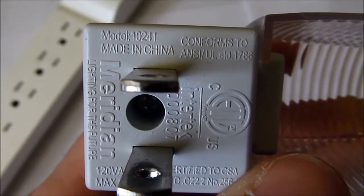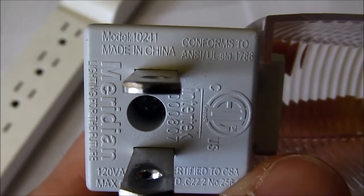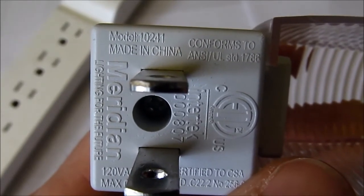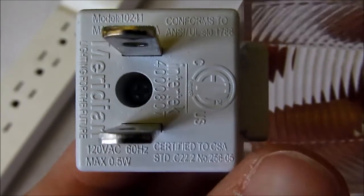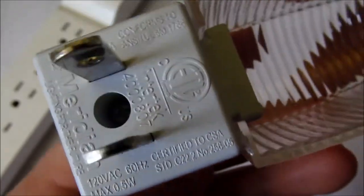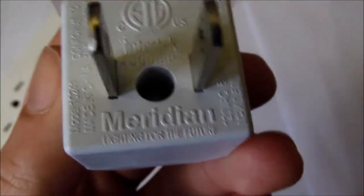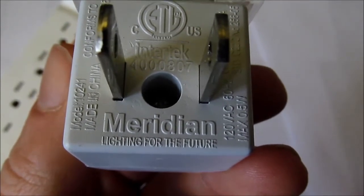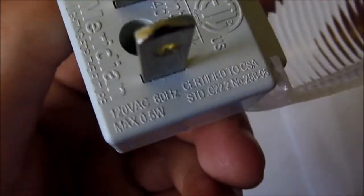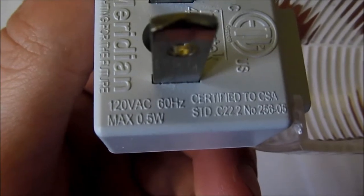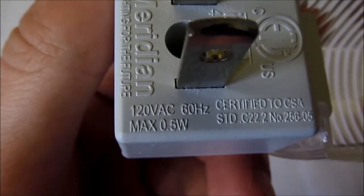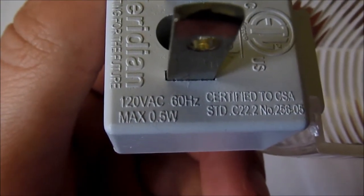Got the standard markings on the back. Model number, made in China of course, conforms to various standards for different countries. Meridian, lighting for the future. And then down in the corner there, 120 volts AC, 60 Hertz, one half of a watt.